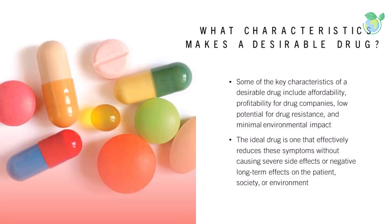What characteristics make a desirable drug — chemicals that can effectively treat a particular disease or condition? This process begins with the diagnosis of a disease with well-characterized symptoms that negatively impact the patient's quality of life. The ideal drug is one that effectively reduces these symptoms without causing severe side effects or negative long-term effects on the patient, society, or environment. Key characteristics of a desirable drug include affordability, profitability for drug companies, and low potential for drug resistance.